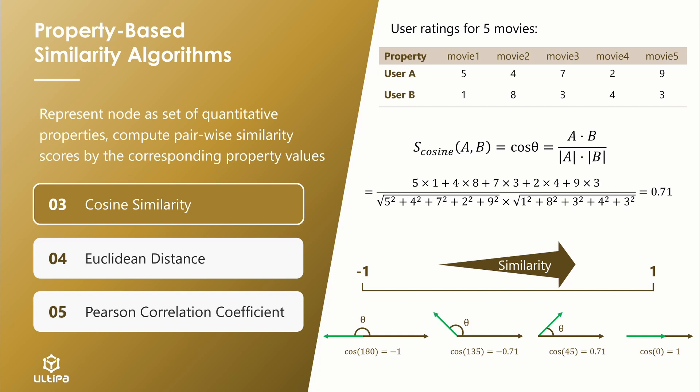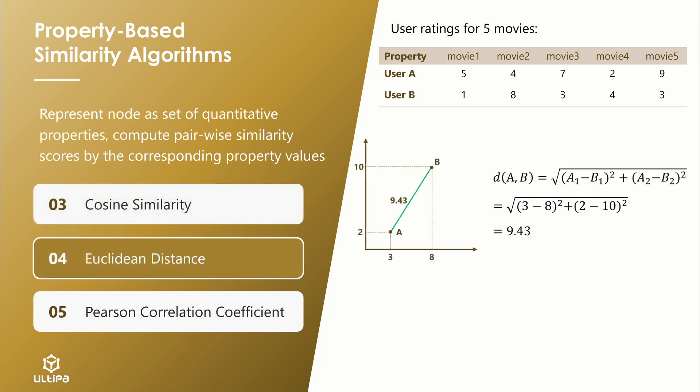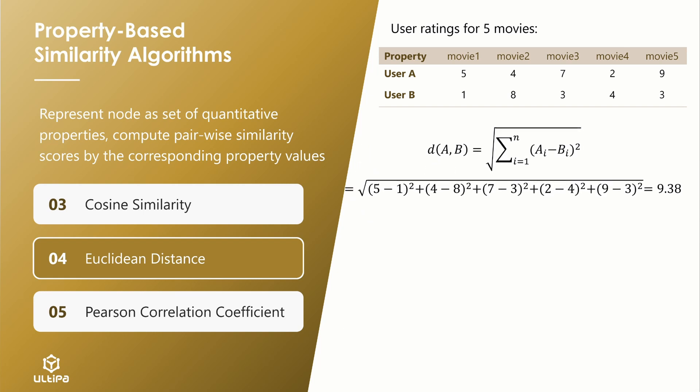The next Euclidean distance is the straight line distance between two points. In math, it's very simple as illustrated in this two-dimensional example. This formula can be generalized to an n-dimensional space. In our movie rating example, the distance between user A and B is 9.38. The range of Euclidean distance is 0 to infinity, with larger distance indicating that the two entities are more dissimilar. Therefore, in practice, Euclidean distance is often used in some normalized form.